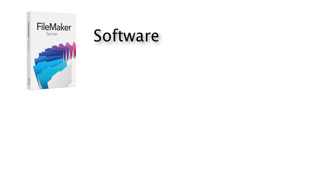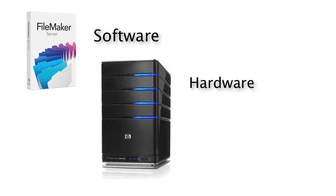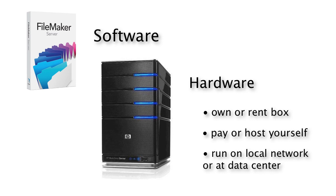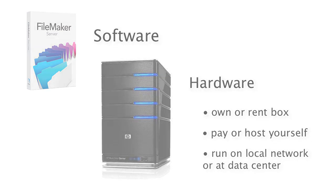In summary: you need to purchase FileMaker Server software and a dedicated box to run it on — either your own or a rented one. You can have someone else host it and pay monthly, or you can do it yourself. If you run your own FileMaker Server in your own office, your local personnel get maximum performance. You can also co-locate your server at a data center for improved internet responsiveness and electrical generator backup. Hopefully this gives you some ideas about deployment options for FileMaker databases — it's not that complicated.